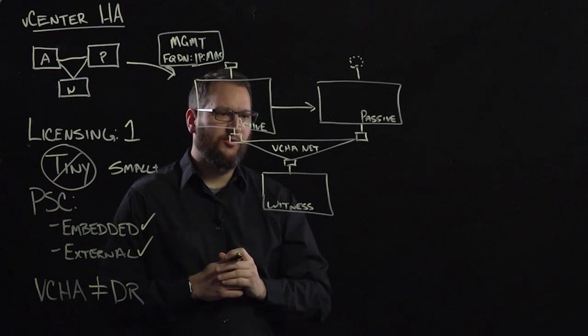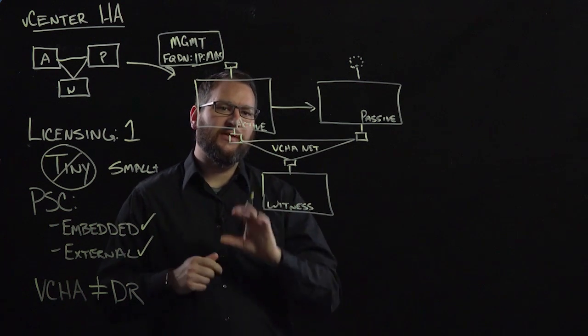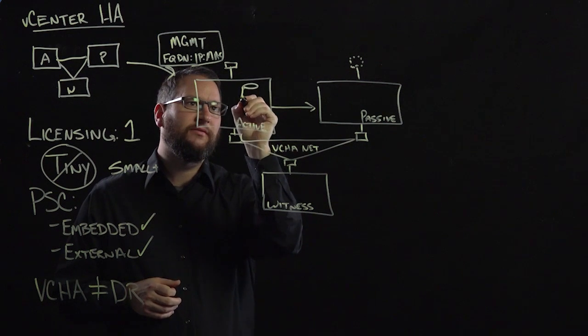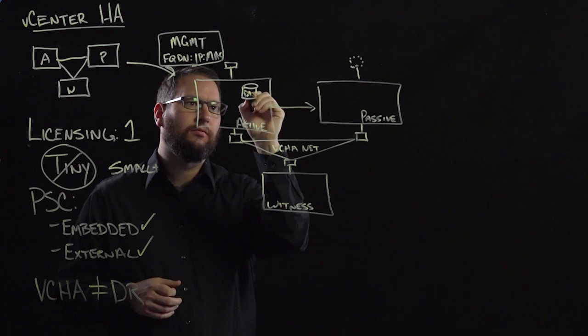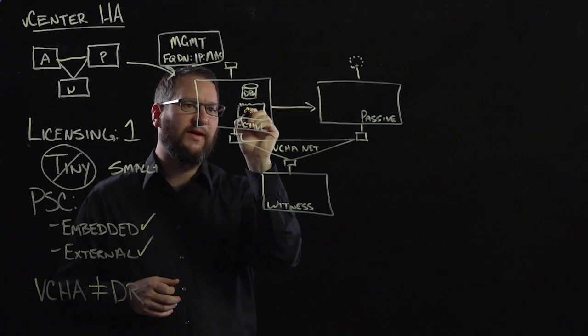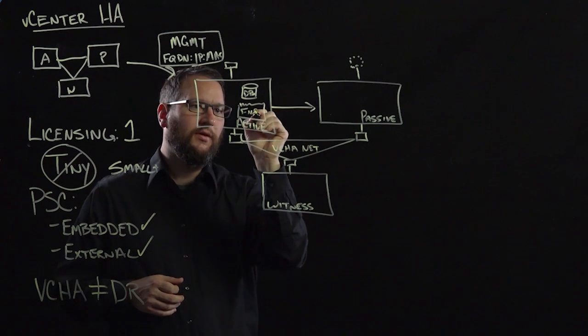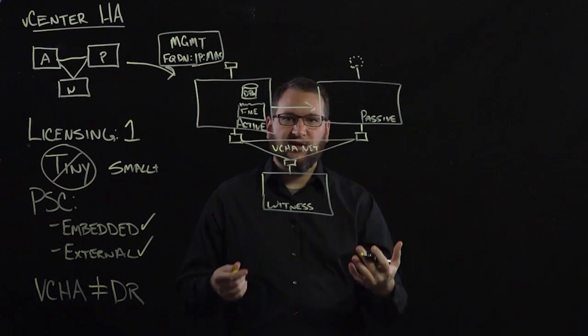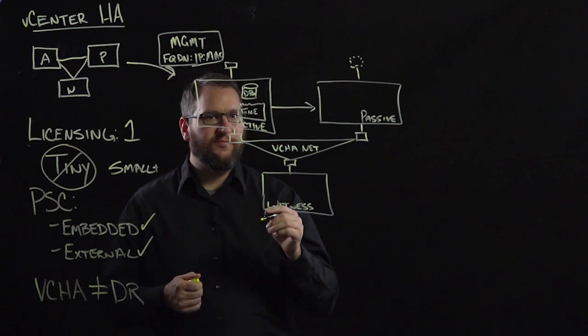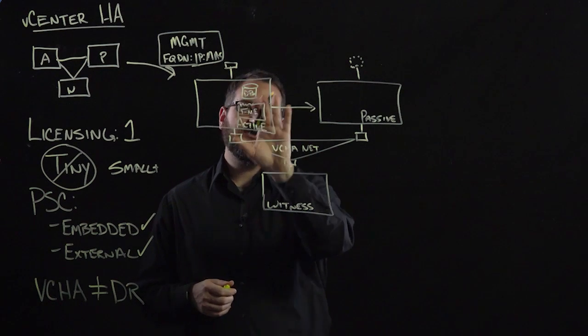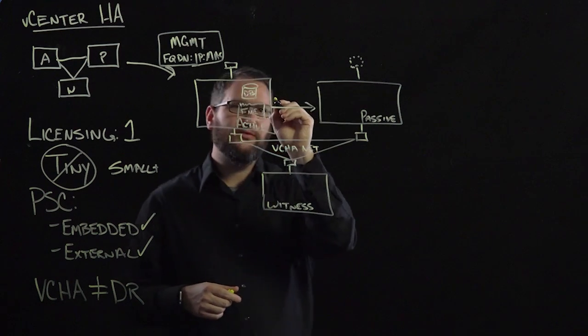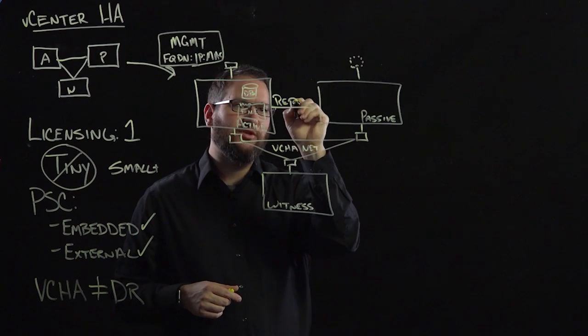Now that we have the network situated, there are a few other things that make up a VCenter. We have a database. And then we have some set of files on the file system that make up the configuration. Configuration files, certificates, things of that nature. And so we need to get these two sets of data over to our passive node. So there's going to be some replication involved.